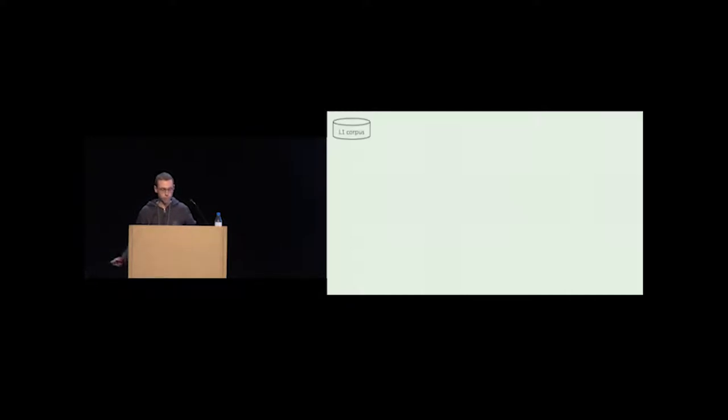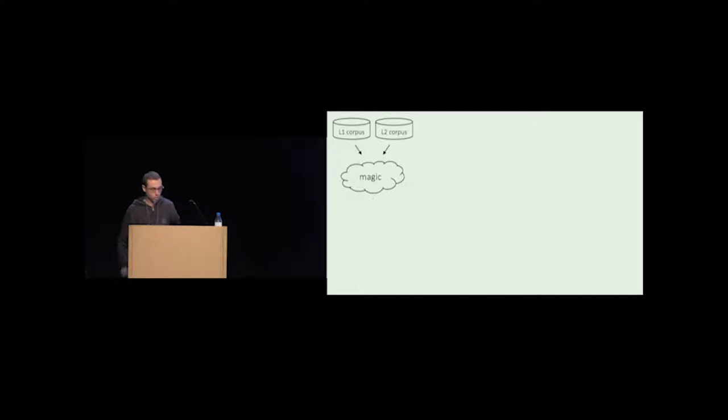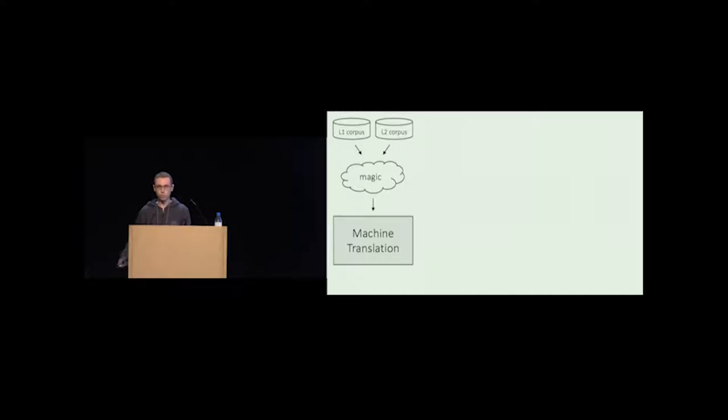The problem we are trying to solve in this paper is very simple. Given a monolingual corpus in language 1 and a separate monolingual corpus in language 2, our goal is to do some sort of magic that should result in a machine translation system capable of translating from language 1 to language 2.